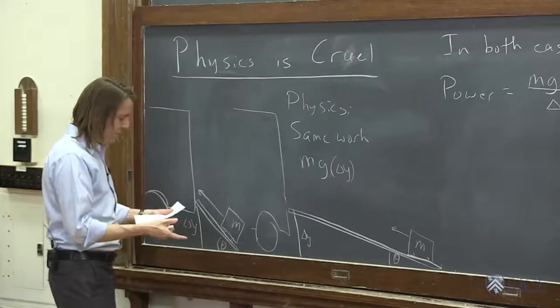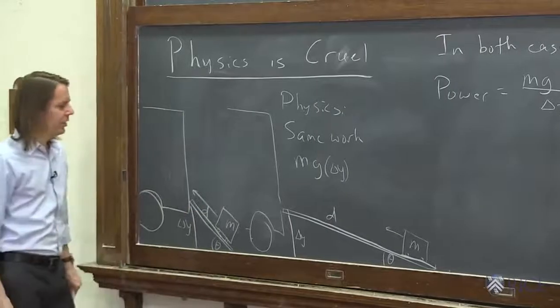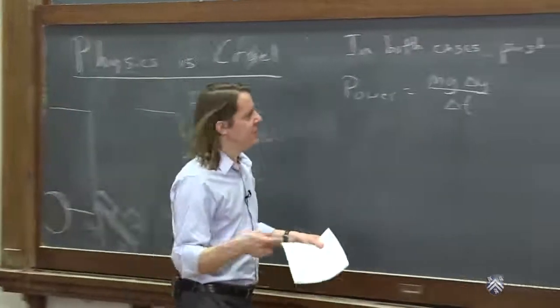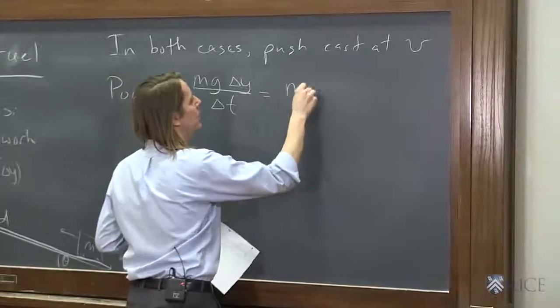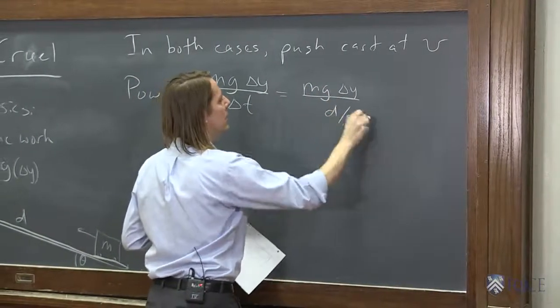So if we say the ramp's length is d, in both cases, it depends on the angle, of course. Then d equals vt. Then in the bottom, you'd put d over v. So mg delta y, and this must be d over v, like that.